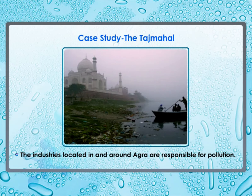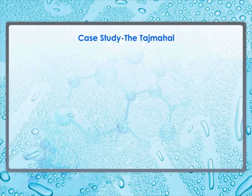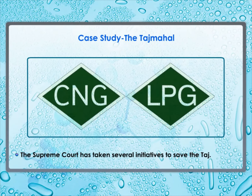Suspended particulate matter, such as soot particles emitted by the Mathura oil refinery, has contributed to the yellowing of the marble. The Supreme Court has taken several steps to save the Taj. It has ordered industries to switch to cleaner fuels like CNG (compressed natural gas) and LPG (liquefied petroleum gas), and automobiles should switch over to unleaded petrol in the Taj zone.